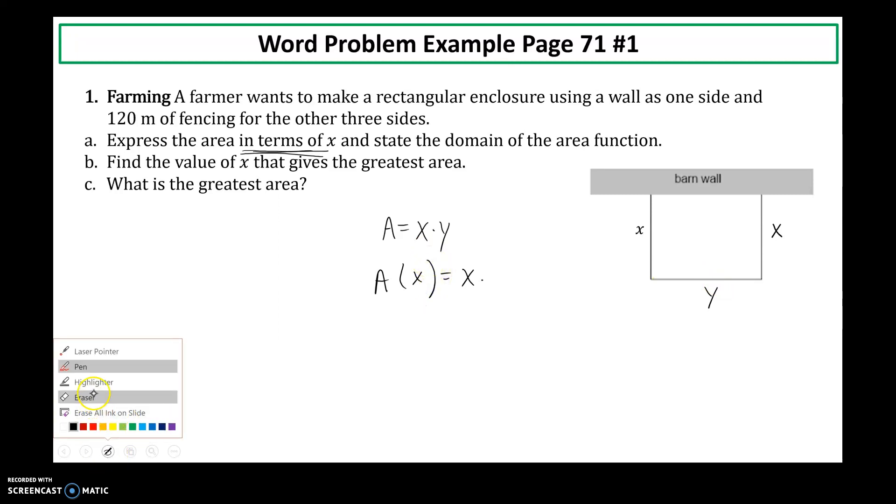This is where your other piece of information comes in. I have 120 meters of fencing available for the other three sides. So what does that represent? That 120 meters represents the perimeter of this enclosure that wants to be made.